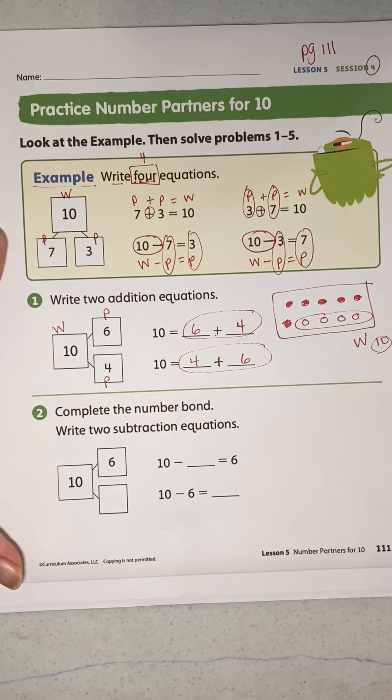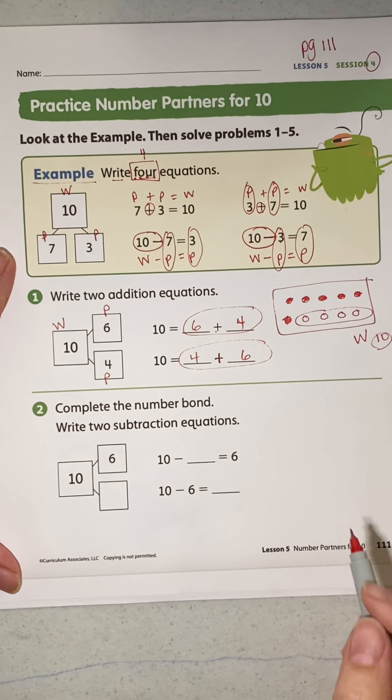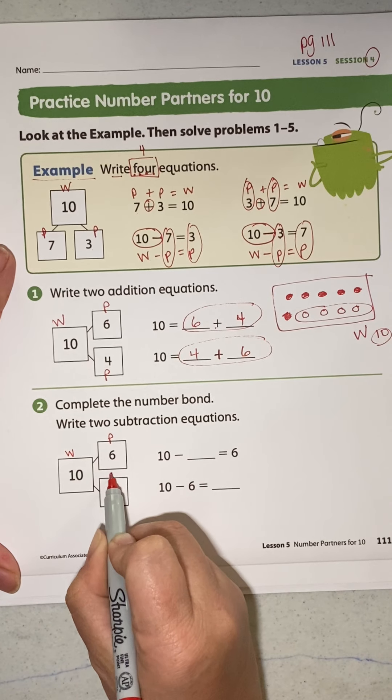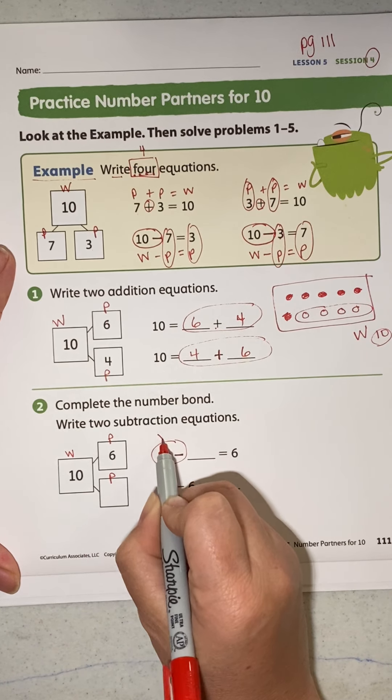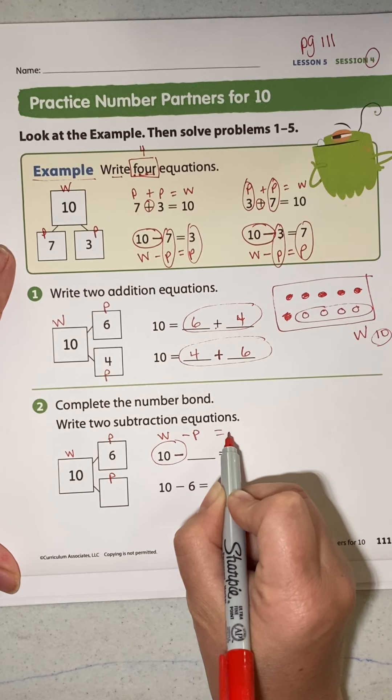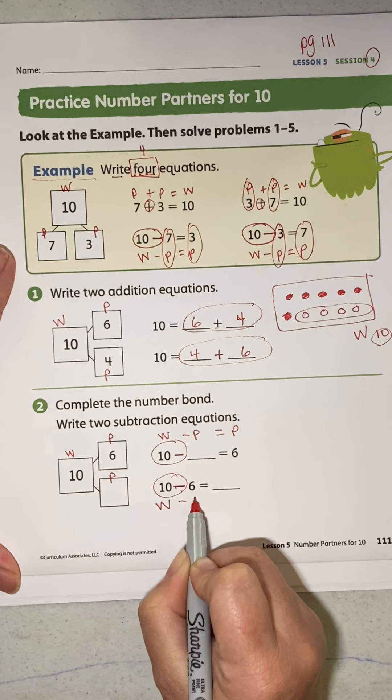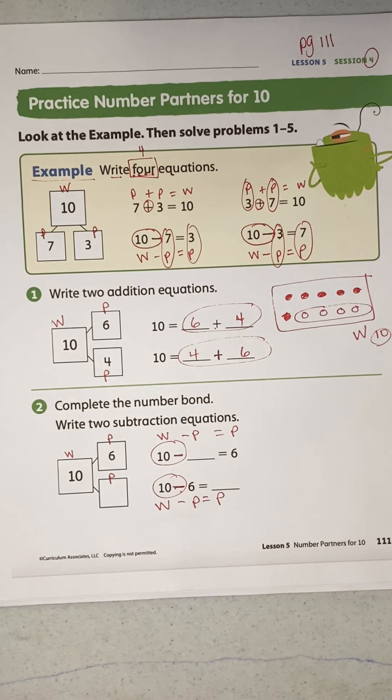Number 2 says write the number bond. Write 2 subtraction equations. Whole, part, part, minus. Whole minus a part equals a part. Minus. Whole minus a part equals a part.